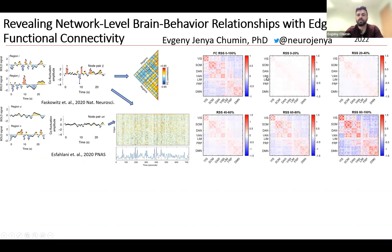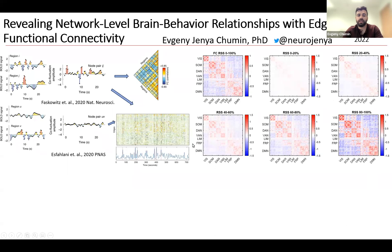When we do this in an IDRC dataset, this is the functional connectivity matrix — the average for the full dataset of 152 participants. You can see this resting state network structure. When we take subsets of data divided into five bins of 20% of RSS, you can see that the network structure is still present, but the magnitude of the co-fluctuation is really what changes.